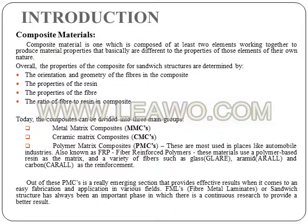Introduction: Composite material. The composite material is composed of at least two elements working together, producing a material that is basically fit from the properties of those elements. Overall, the properties of the composite sandwich structures are determined by the orientation or geometry of fibers in the composite, properties of the resin, properties of the fiber, and the ratio of fiber to resin in the composite.